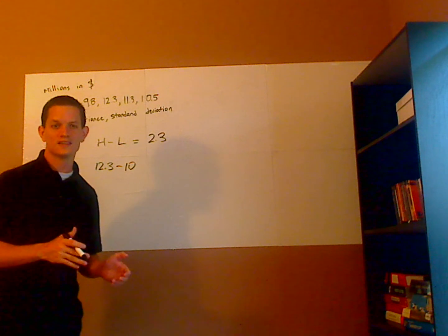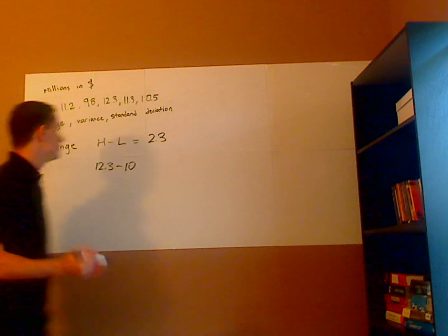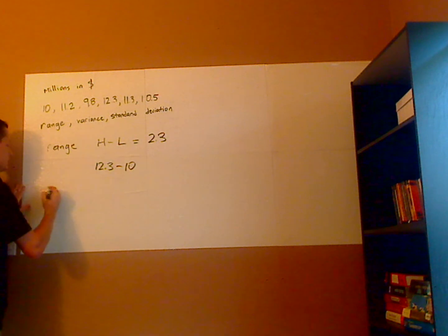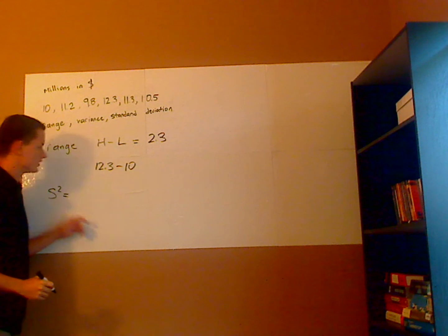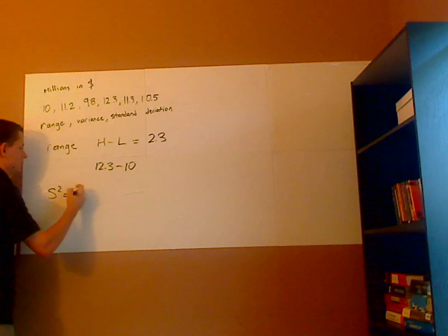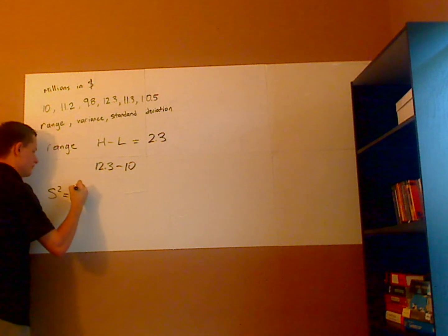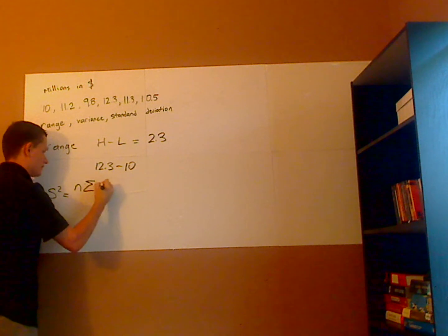Now to calculate the variance and the standard deviation, they're related, right? You have the variance and then the square root of the variance is your standard deviation. So first let's calculate the variance. We're calculating the variance of the sample, that's why you have an s here and not a sigma.